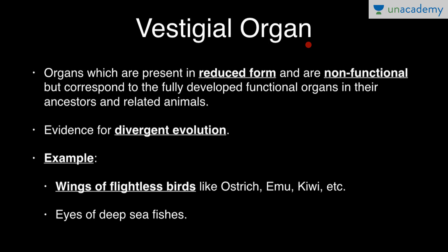Vestigial organs are another evidence for evolution. These are organs present in reduced form and non-functional, but correspond to fully developed functional organs in ancestors and related animals. Such organs are evidence for divergent evolution. Examples include wings of flightless birds like ostrich, emu, and kiwi.